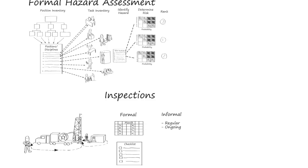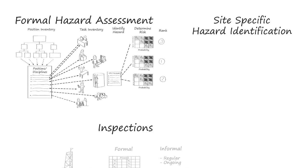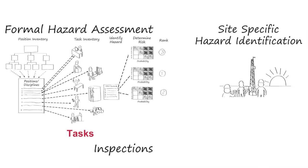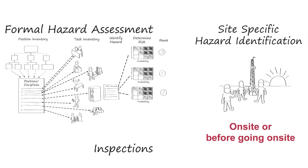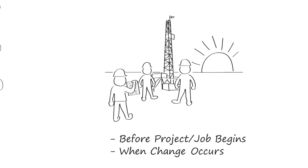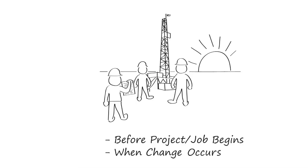So we've looked at formal hazard assessments and inspections. What about site-specific hazard identification? Site-specific hazard identification looks at a specific operation or work environment to identify the hazards these will present. It may be carried out on the site itself or in a pre-job meeting before going to the site, or a combination of both. The key is that it is carried out before the project or job begins or when a change occurs. Typically, there are formalized processes or checklists associated with this type of hazard identification, and communication is a key component.